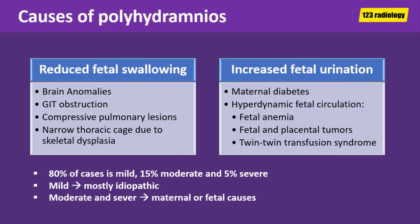There are essentially two major causes of polyhydramnios. Number one is reduced fetal swallowing, which can be due to brain abnormalities, gastrointestinal obstructions such as esophageal or duodenal atresia, compressive pulmonary disorders like pleural effusions or diaphragmatic hernia, and narrow thoracic cage due to skeletal dysplasia. The second cause is increased fetal urination, which occurs in cases of maternal diabetes mellitus, maternal uremia, and hyperdynamic fetal circulation due to fetal anemia, fetal and placental tumors, or twin-to-twin transfusion syndrome.